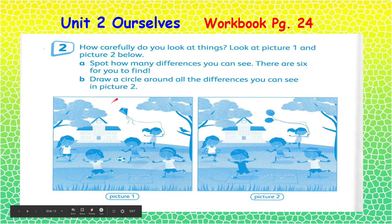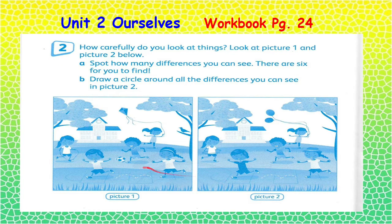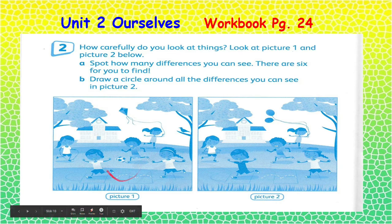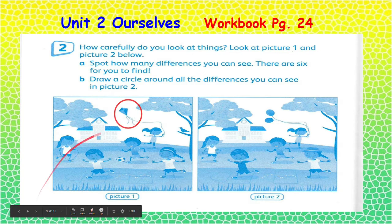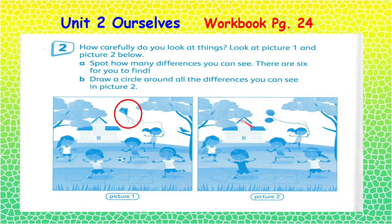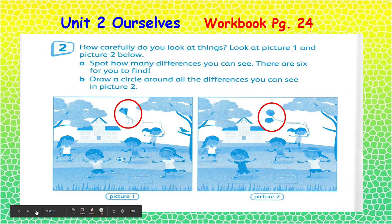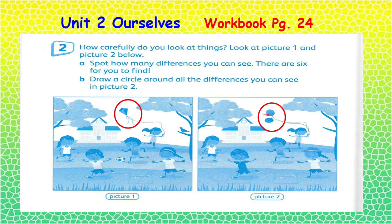On number two, you carefully look at things that are different from picture number one and picture number two. Remember there are six differences we need to find. The first one is this kite — and in picture two, there are balloons. So one difference is a kite instead of balloons.